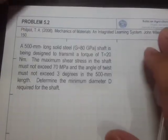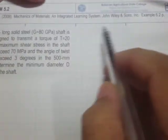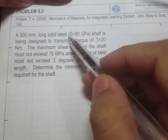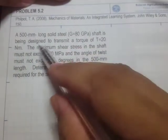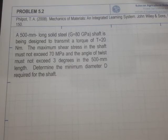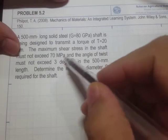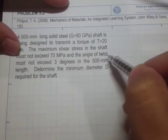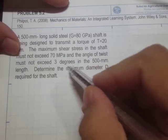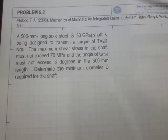The next problem is from the textbook by Philpot, Example 6.2. A 500 mm long solid steel shaft is being designed to transmit a torque of T equals 20 Newton·meters. The maximum shear stress must not exceed 70 MPa, and the angle of twist must not exceed three degrees over the 500 mm length. Determine the minimum diameter D required for the shaft.